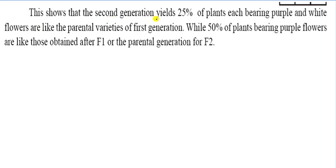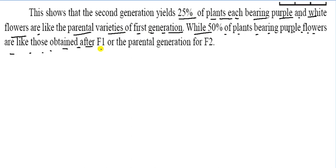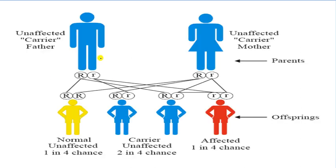This shows that in the second generation, 25% of plants each bring purple and white flowers like the parental varieties of the first generation, while 50% of plants bring purple flowers like those obtained after F1. You can see here the unaffected carrier father and unaffected carrier mother and the sickle cell structure — how it can be affected and how it cannot. It is sickle cell structure.